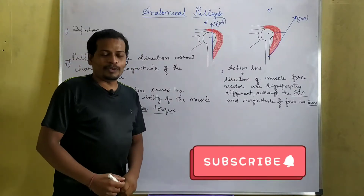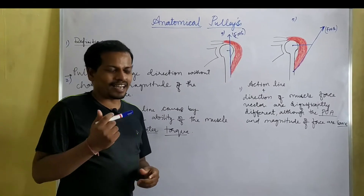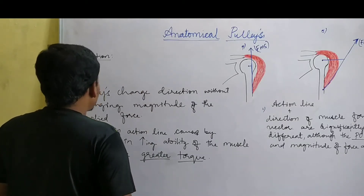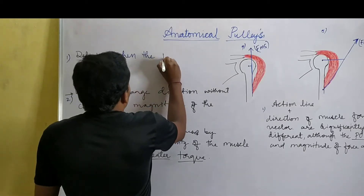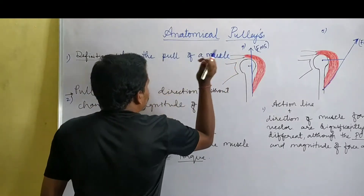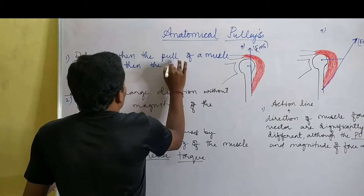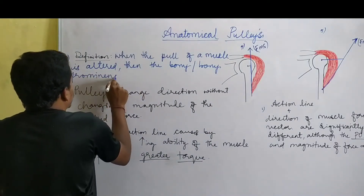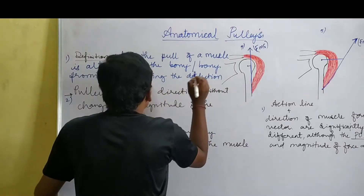In this video we'll discuss about anatomical pulleys. First, as we start in every video, the definition: what is an anatomical pulley? When the direction of pull of a muscle is altered, the bone or bony prominences causing the deflection forms an anatomical pulley.